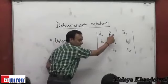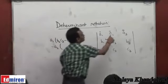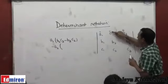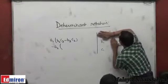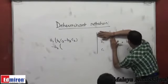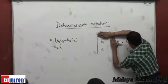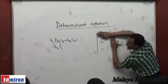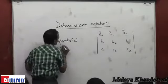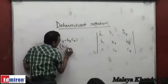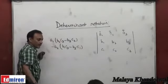Then minus a2, and then now this a2 belongs to the second column and the first row. So hide the second column and the first row. You are left with elements b1, b3, c1, c3. The determinant of this is b1 c3 minus b3 c1, right?